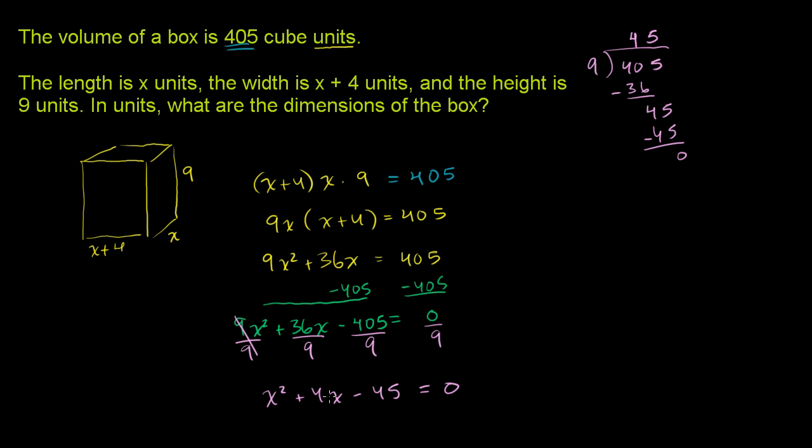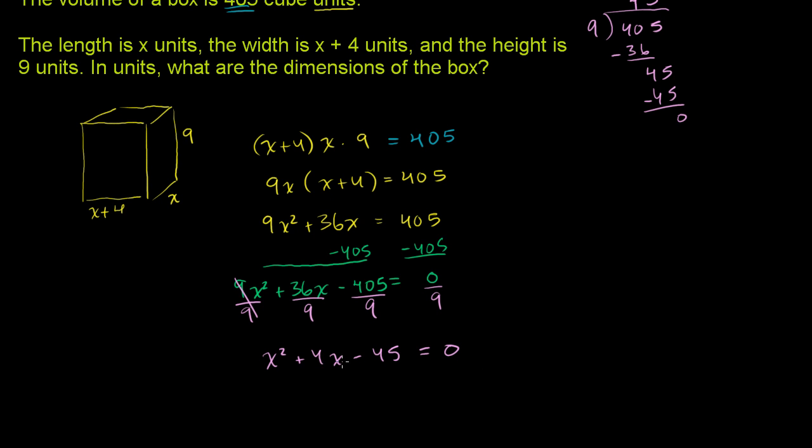Now we can factor this. What two numbers, when I take their product, I get negative 45, and when I take their sum, I get positive 4? One has to be positive and one negative. When you're taking the sum, you're really taking their difference because one is negative. If you have positive 9 and negative 5, that'll work. Positive 9 plus negative 5 is 4, and their product is negative 45. So you have x plus 9 times x minus 5 equals 0.